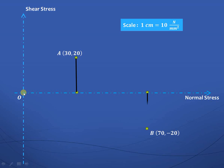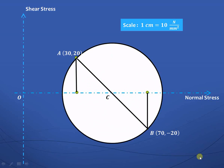Drop perpendiculars from points A and B onto the X-axis, then join A and B. This line AB intersects the normal stress axis at point C. With C as the center and CA or CB as the radius, draw the circle. This is our Mohr's circle, and suppose the circle intersects the X-axis at points D and E. Draw the vertical line as shown.